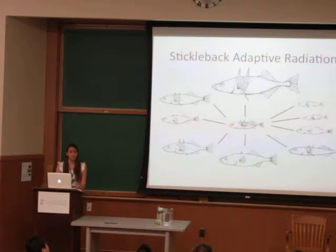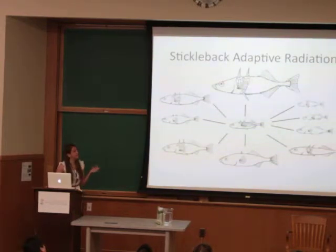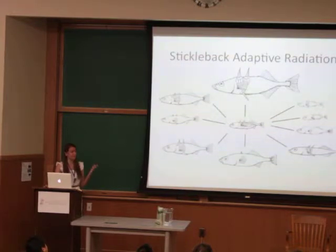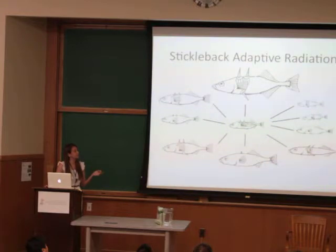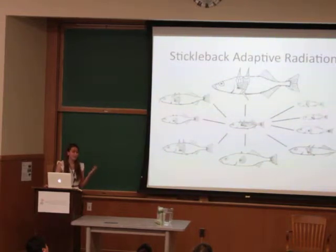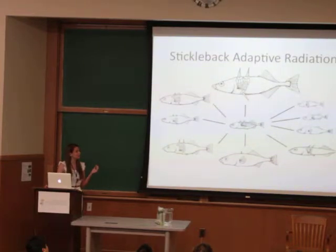Similar to the diversification that you can see in Darwin's finches, this schematic of the stickleback adaptive radiation demonstrates the divergence of physical traits. Pictured at the center is the ancestral marine stickleback, which is surrounded by various derived freshwater forms. As you can see, freshwater stickleback look very different from their marine ancestors.